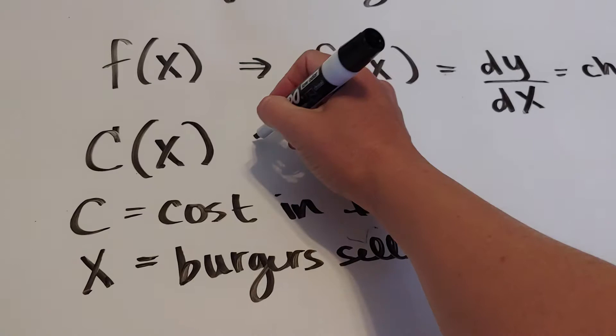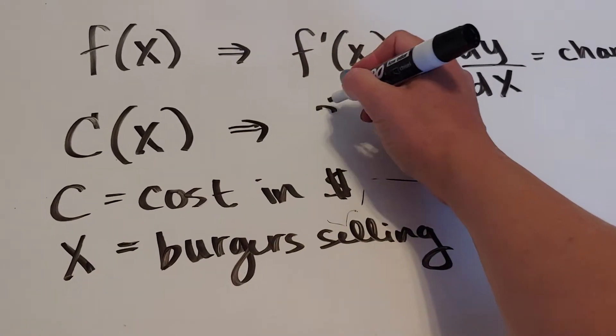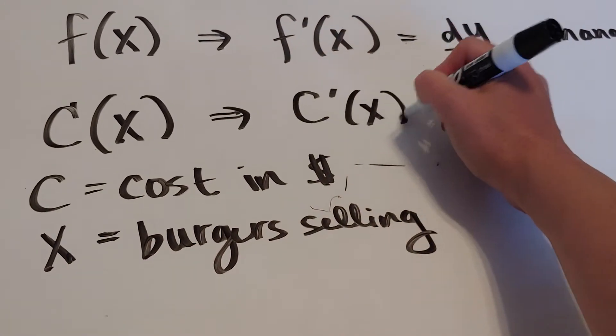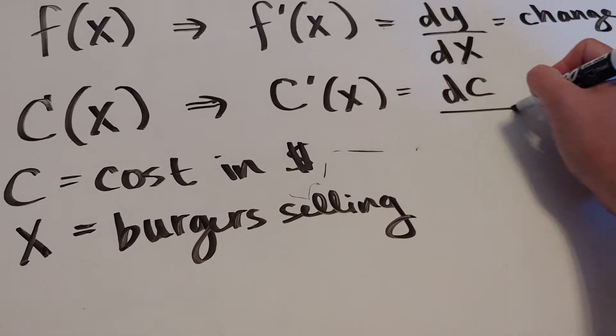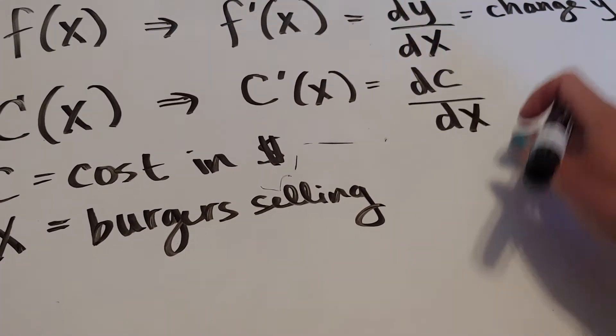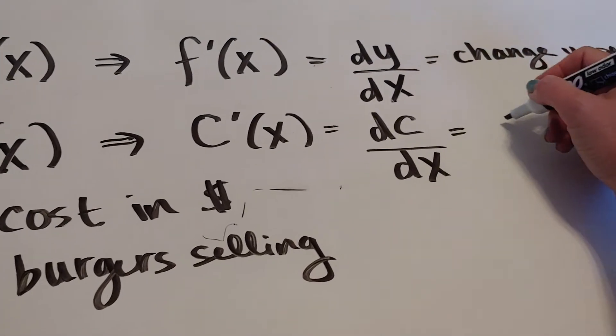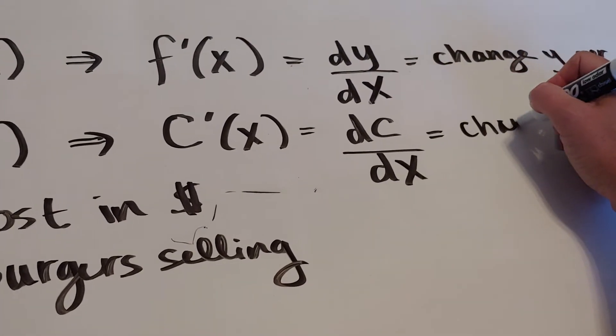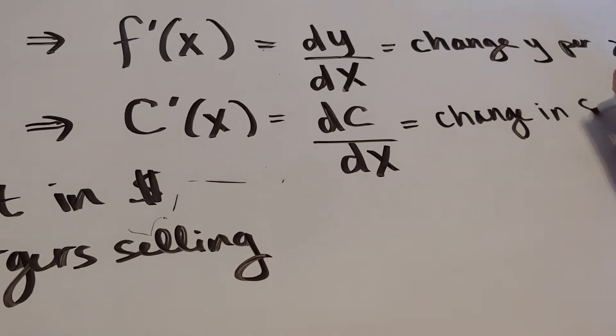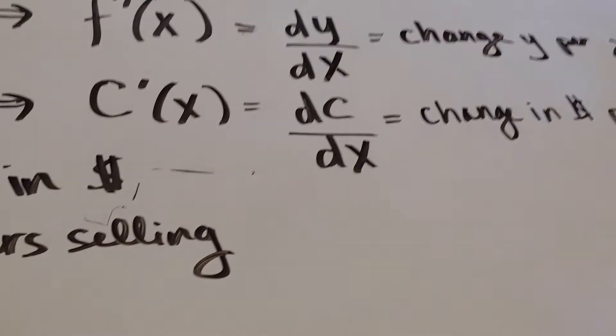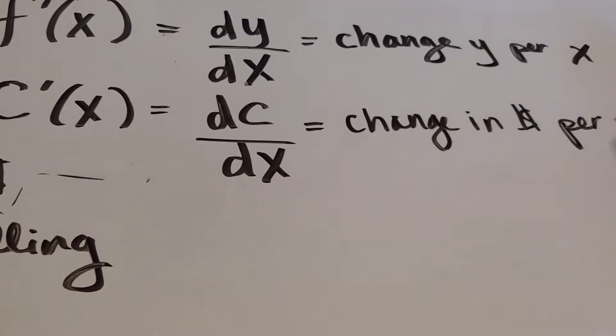What that means, then, is that if I find c prime of x, what that's really doing is I'm finding dy, but that y is a c or cost. So this would be the change in dollars per x, but x here is burgers.